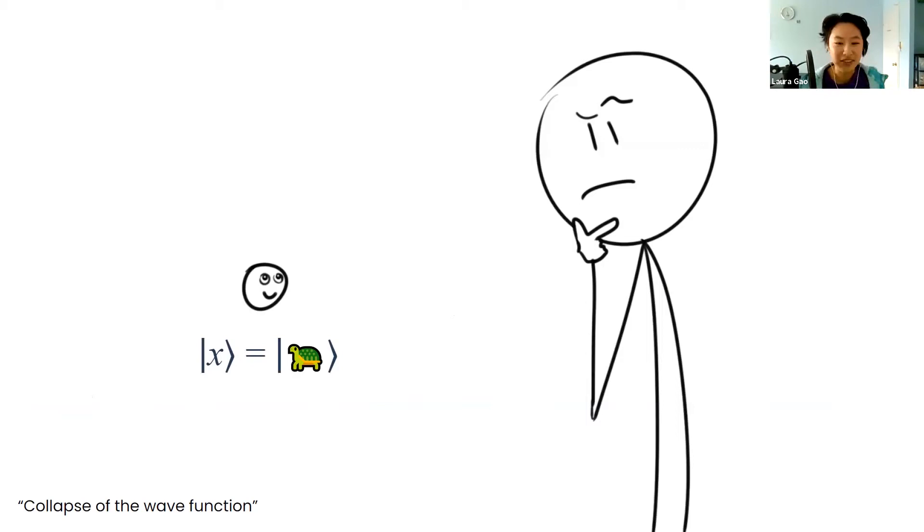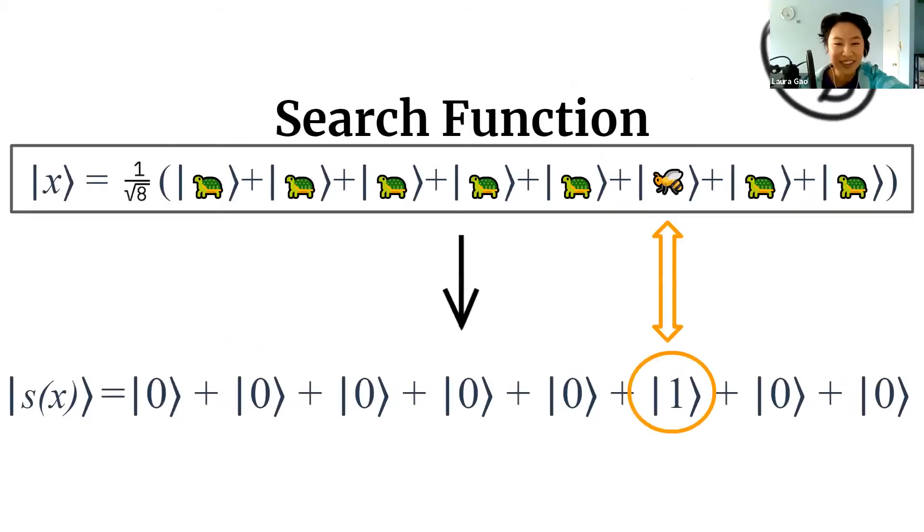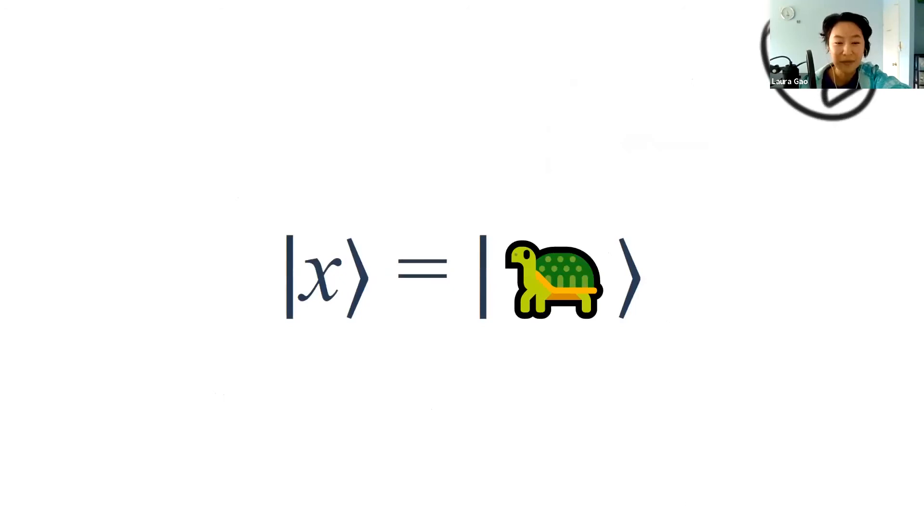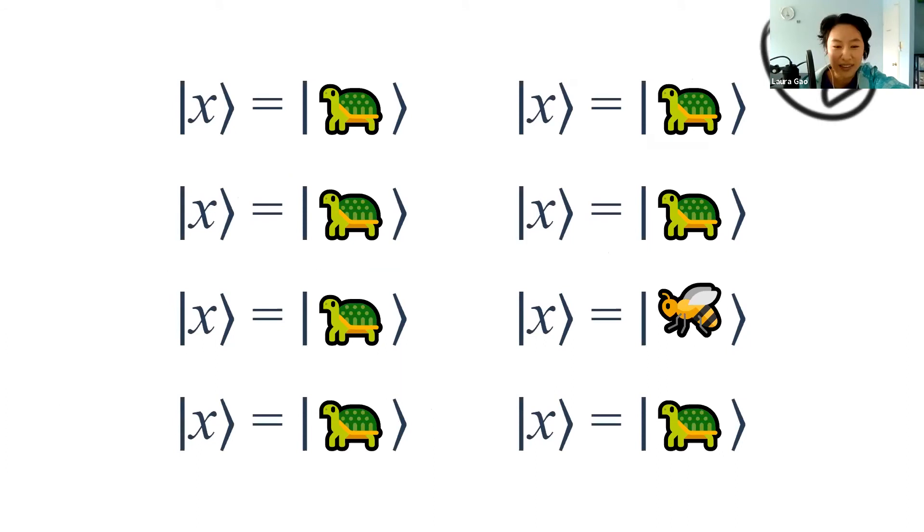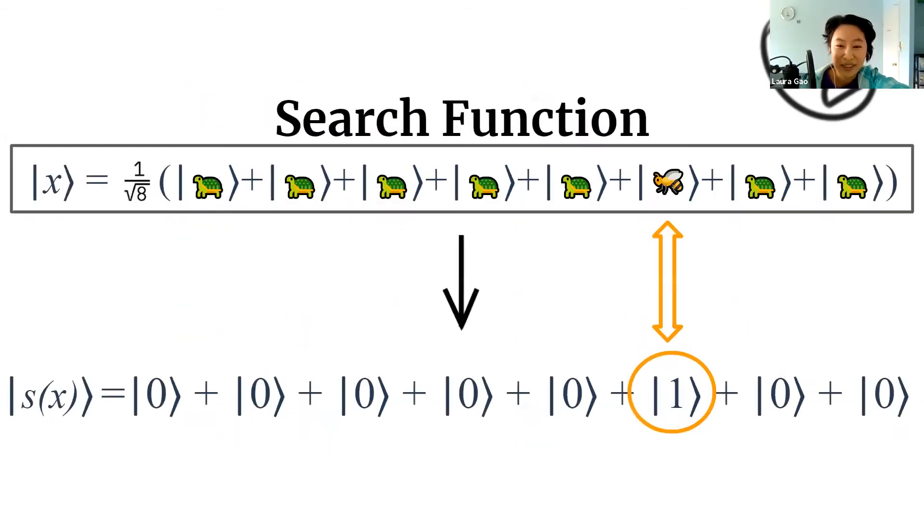If we were to poke our heads into our search function at this time, then all the calculations we've done so far would just be gone. The only thing left would be one of the emojis, a random one out of the eight possibilities. There's only a one in eight chance we actually find the bee that we're looking for, so this is not a very good algorithm.